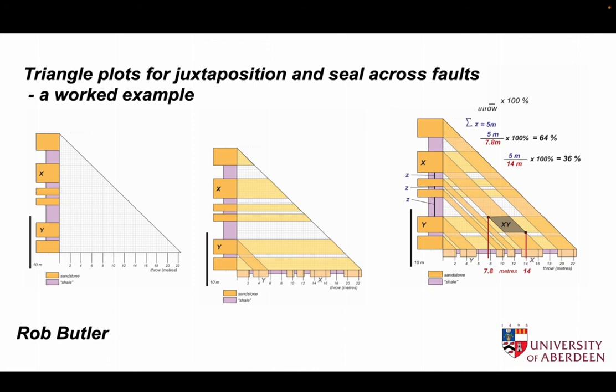This is a worked example for analyzing and forecasting the sealing behavior across faults in a succession of sandstones and shales. We're going to use the shale-gauge ratio, but first we're going to plot the possible juxtapositions of sandstones using a triangle plot.